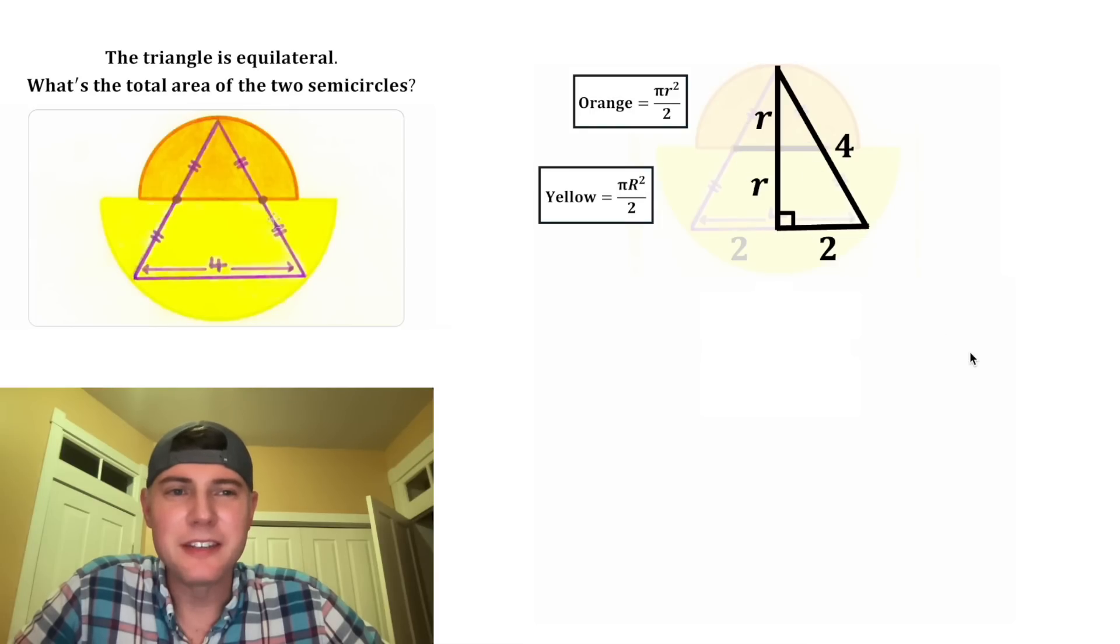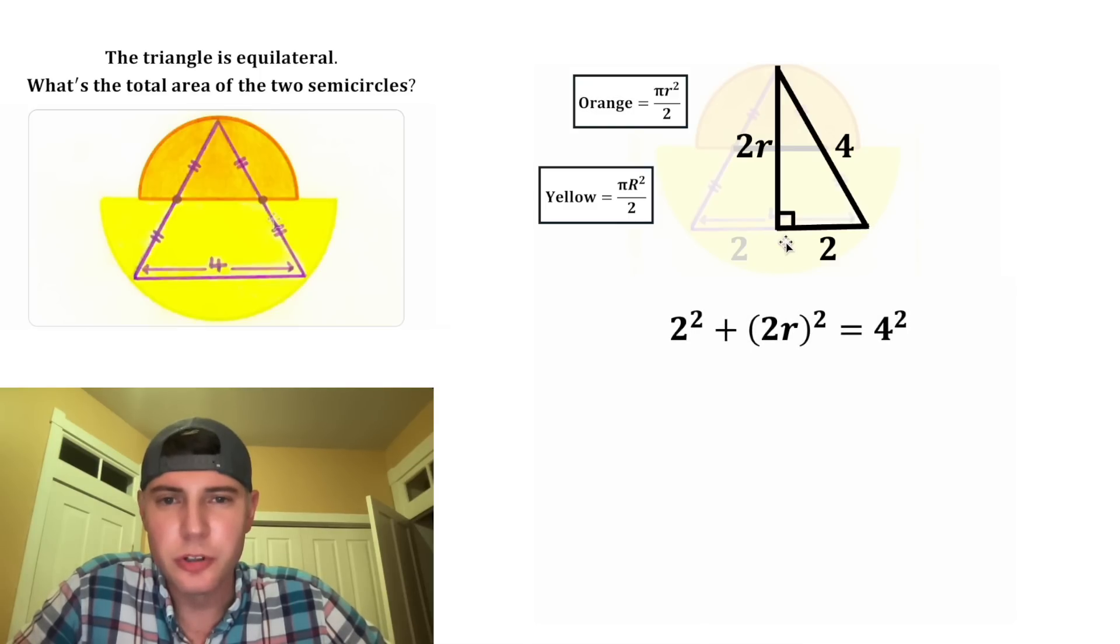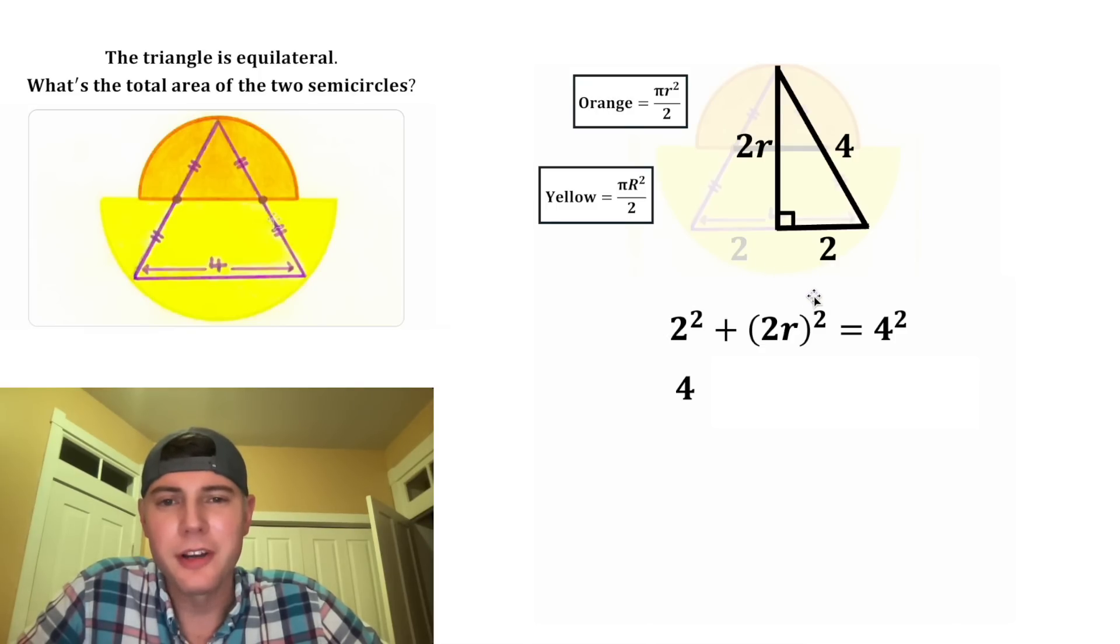By using side splitter theorem, we know that this divided by this equals this divided by this. After we cross multiply, we find that this piece is equal to r. Now we have all the pieces of the right triangle. For this altitude, the little r plus little r will be 2r. The Pythagorean theorem gives us 2² + (2r)² = 4². This two can distribute to both the two and the r, giving us 2²r².